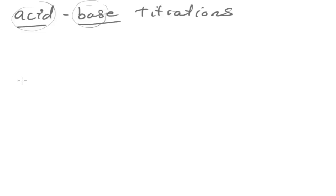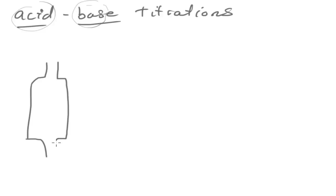When we're doing acid-base titrations, the way we usually react these two substances together so that we can actually measure the reacting volume of the unknown is by using a titration apparatus. In the titration apparatus, the various equipment which we use — we use a pipette. A pipette is basically a device which we use to measure out the volume of the known solution. So if we had the acid, we would have a known volume of acid and we'd know the concentration as well most of the time.